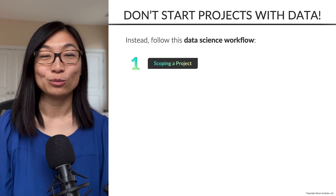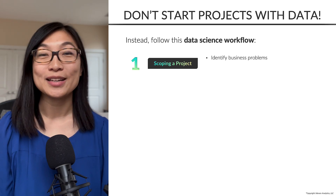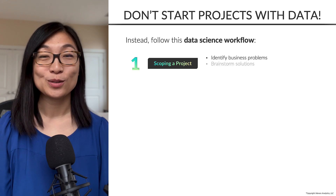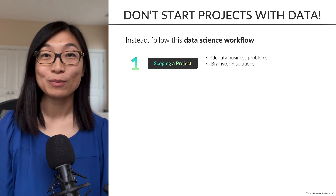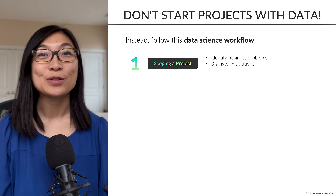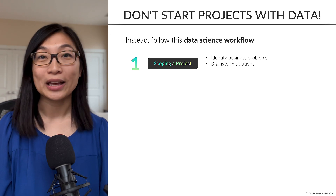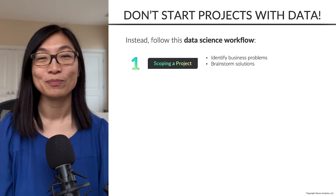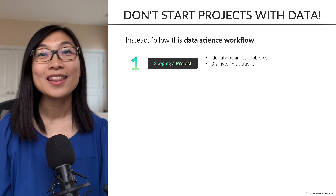Scoping means figuring out what you're trying to do. First, you want to understand what the business problem is — maybe you're trying to increase sales or better understand your customers. Then you come up with solutions: maybe you decide to use a clustering algorithm to better segment your customers, or maybe you choose a non-data-science approach like surveying customers, interviewing them, or looking at Google Analytics for some exploratory analysis.